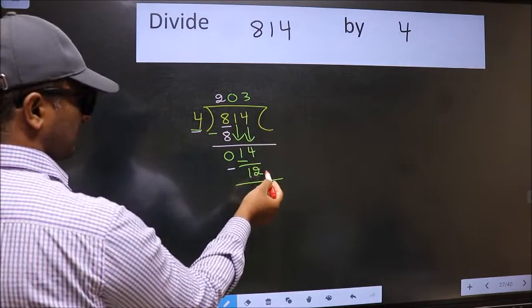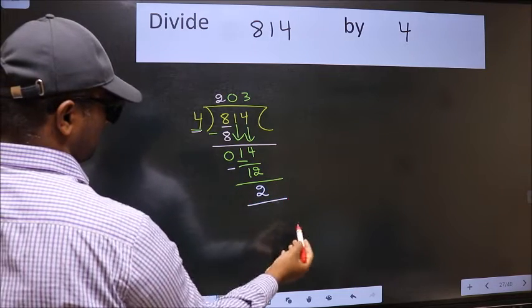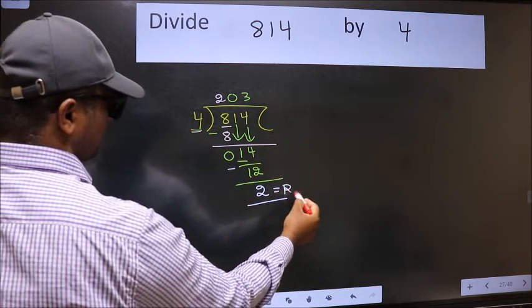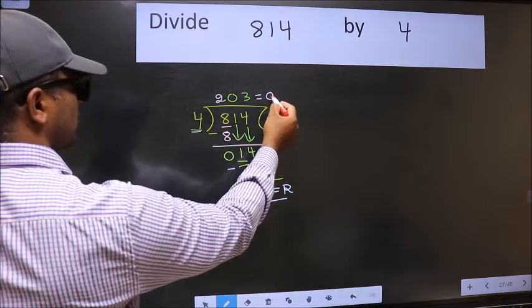No more numbers to bring it down, so we stop here. This is our remainder and this is our quotient.